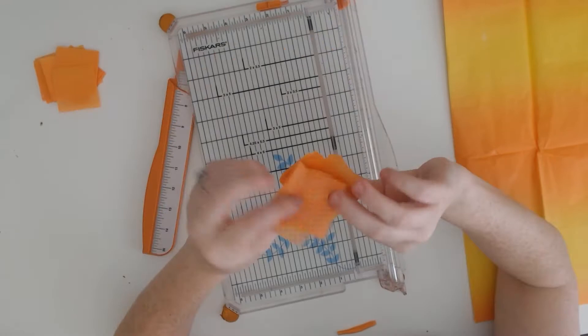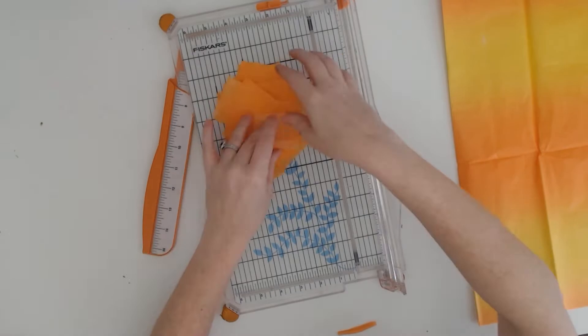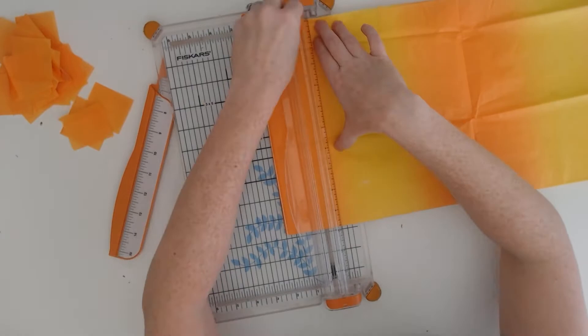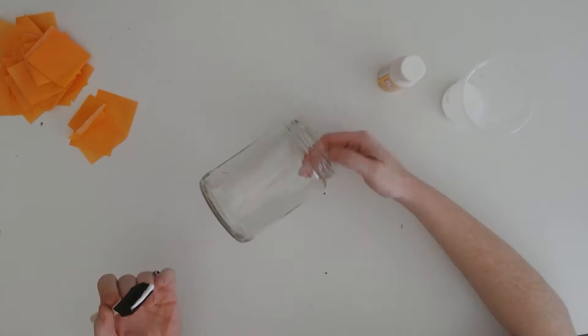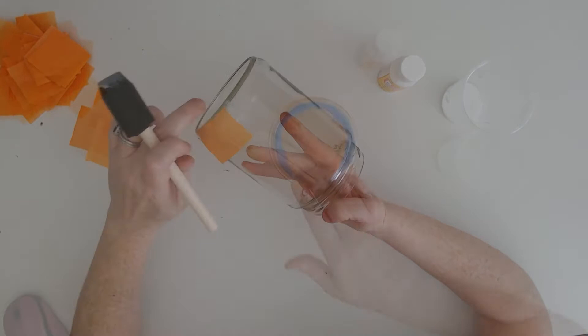But a pair of scissors also works just as well to cut the tissue paper into strips and then cut those strips into about two inch squares. Then go ahead and take some Mod Podge and a foam brush and apply the Mod Podge to the glass. Then just start layering on the tissue paper. You've really got some creative license here to do as many layers as you like.